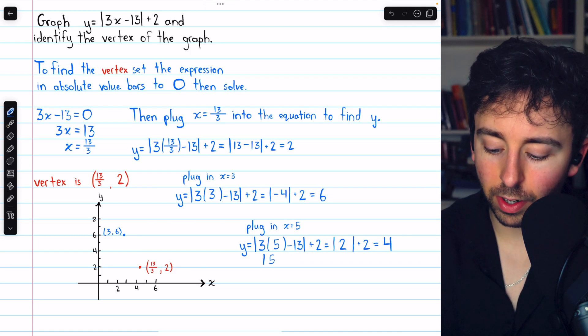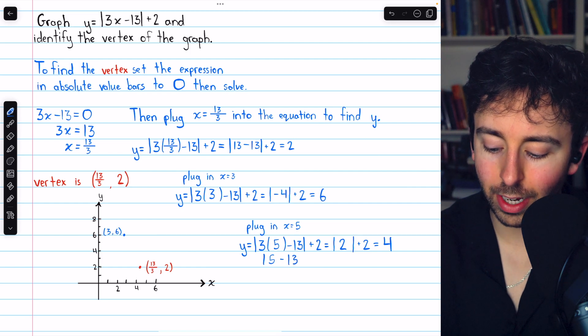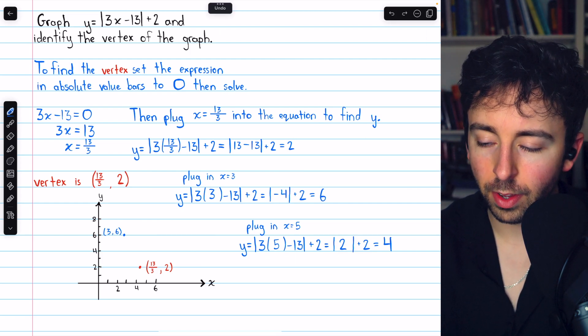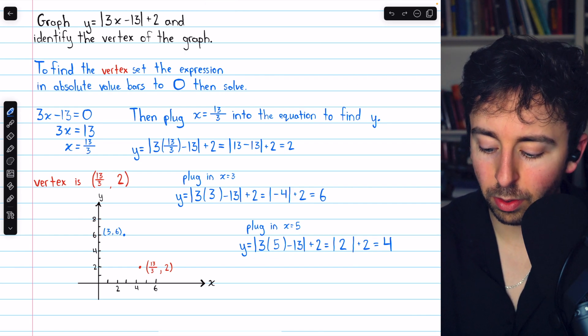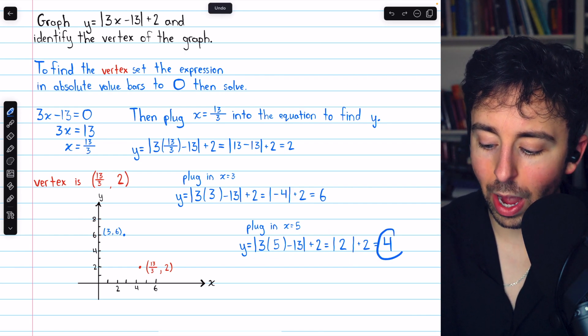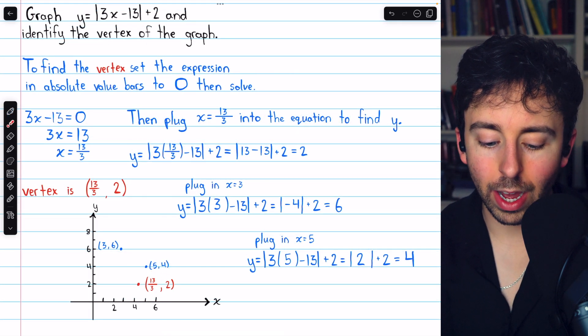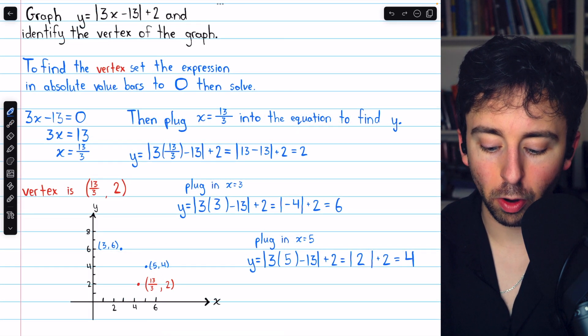Now 3 times 5 is 15, and then we're subtracting 13. So what's left inside the absolute value bars is just 2. And the absolute value of 2 is 2. So this is just 2 plus 2, and so the y-coordinate is 4. So when x = 5, we have y = 4, and we see that point on our graph there.